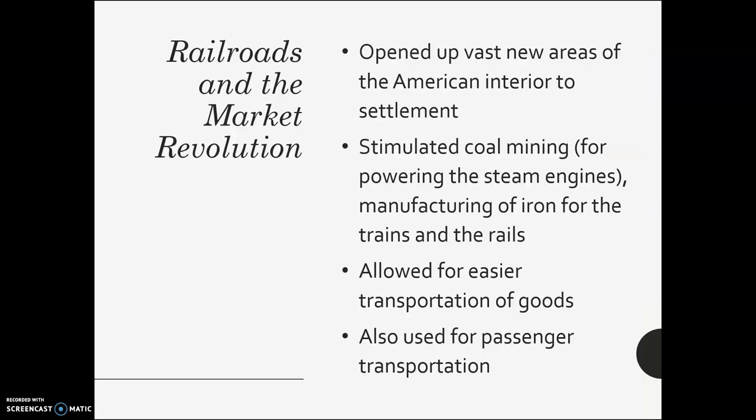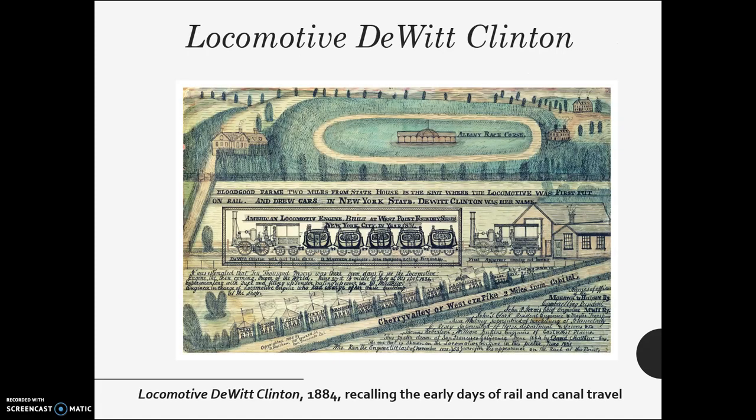Railroads really do open up vast new areas in America for settlement, because now you could bring goods there easily. We're beyond the era of pioneers on the Oregon Trail going out on covered wagons having to bring everything. Now you can transport goods — later you could get mail or a catalog — so even if you're far away, trains could bring you your goods and provide passenger transportation.